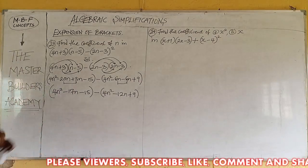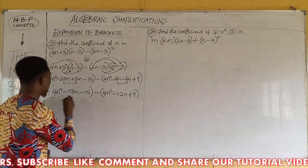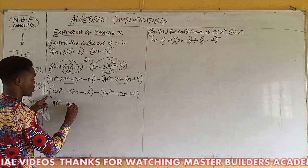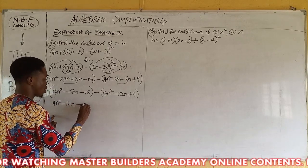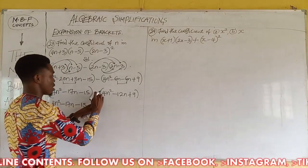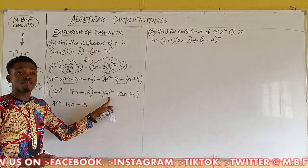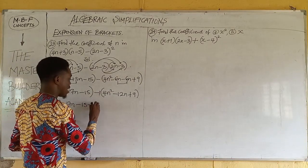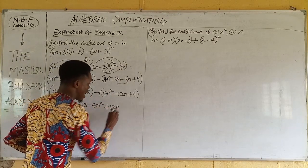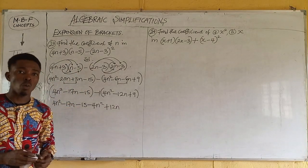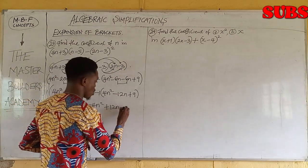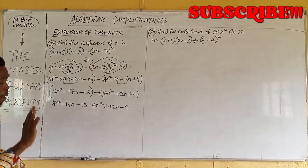The next thing we do is clear off the brackets. The coefficient here is 1, so 1 times everything in the first bracket remains the same: 4n squared minus 17n minus 15. In the second bracket we have minus 1. So minus 1 times 4n squared gives minus 4n squared. Minus 1 times minus 12n gives plus 12n — because minus times minus is plus. And minus 1 times plus 9 gives minus 9.